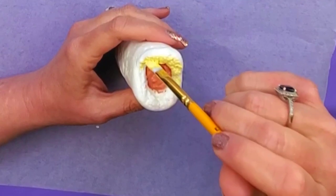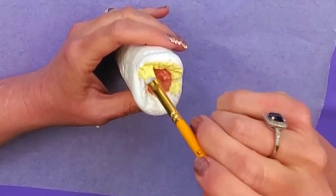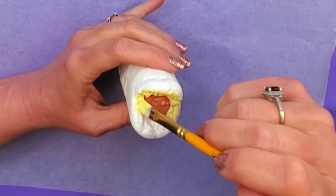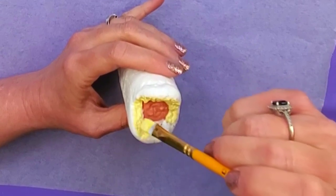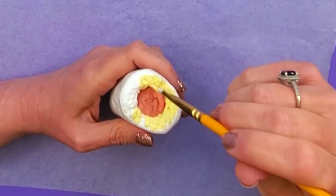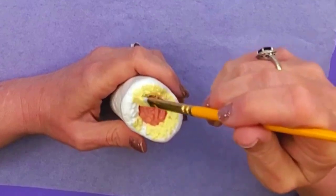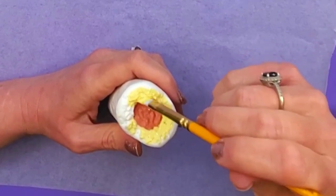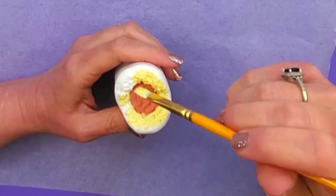We're just going around the hot dog, and it doesn't matter if you get it all the way to the edge. We're going to be shading that with the darker color anyway, so you don't have to be too perfect with that.